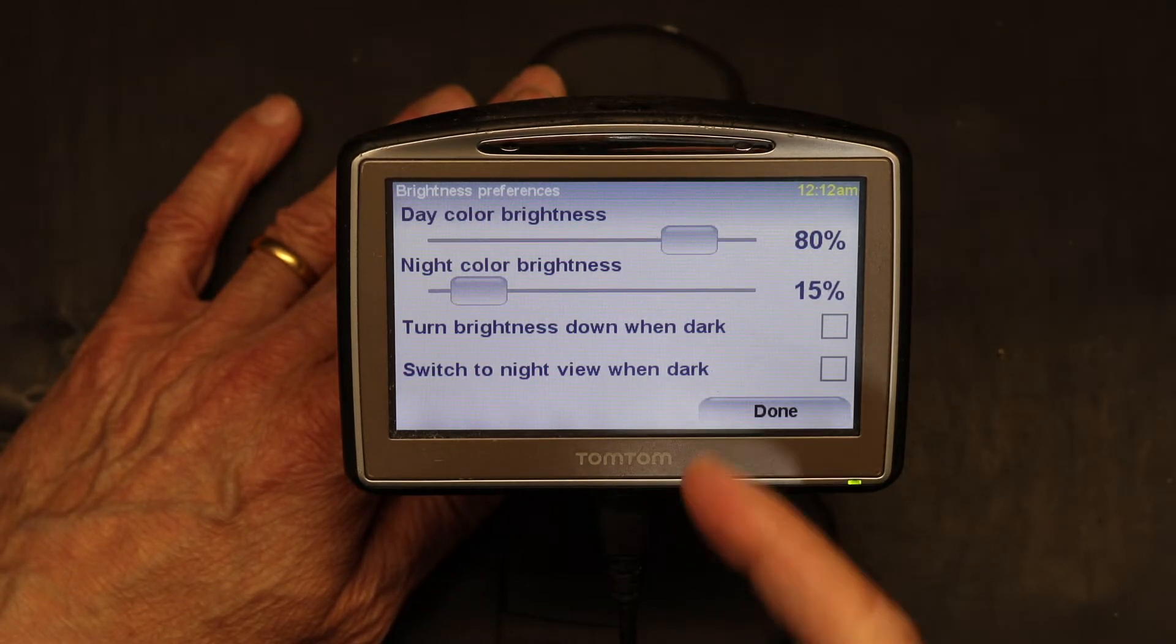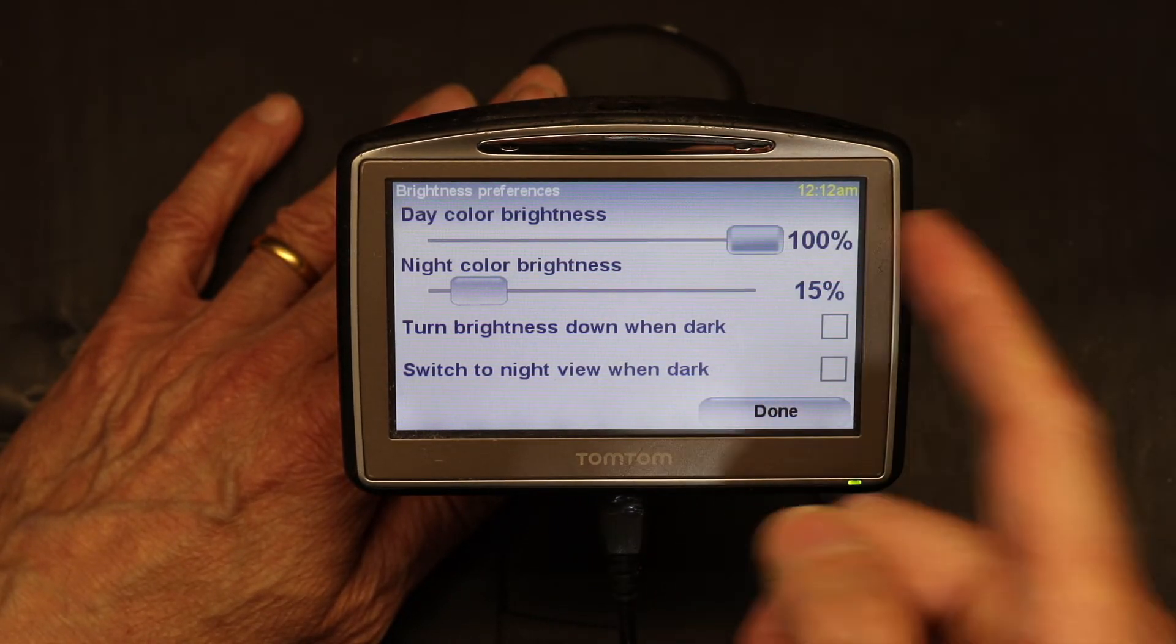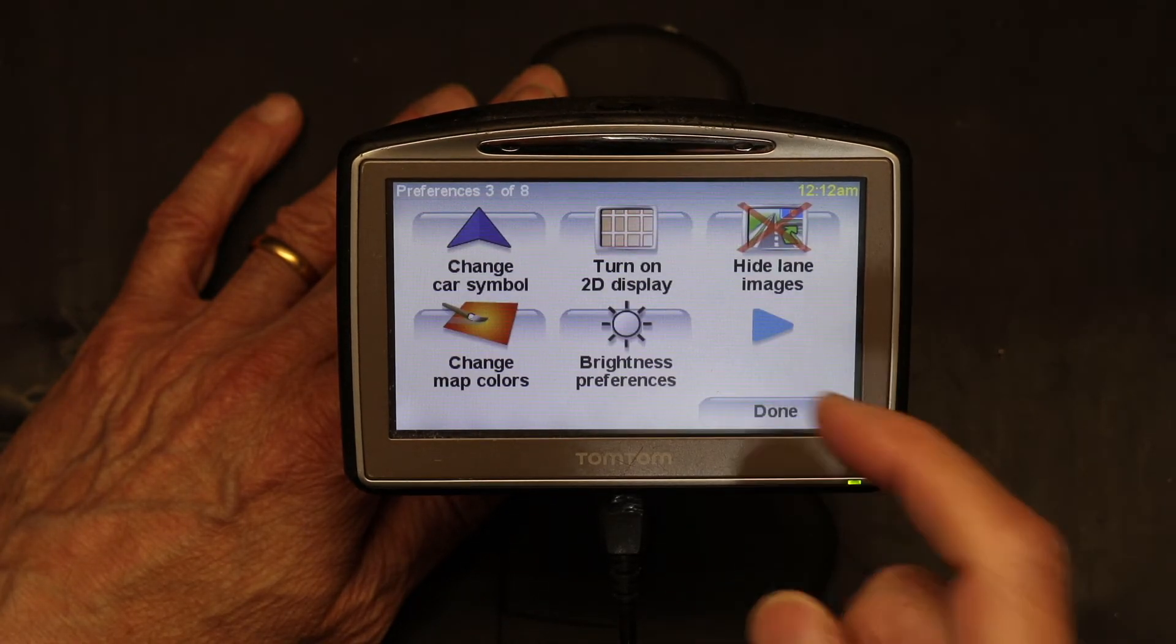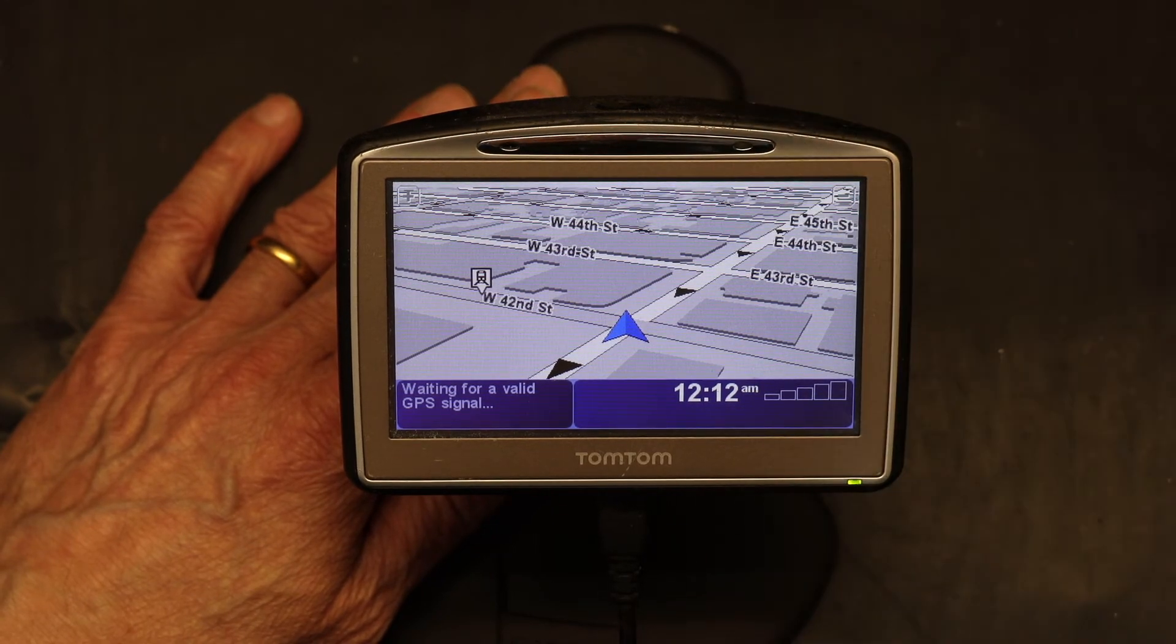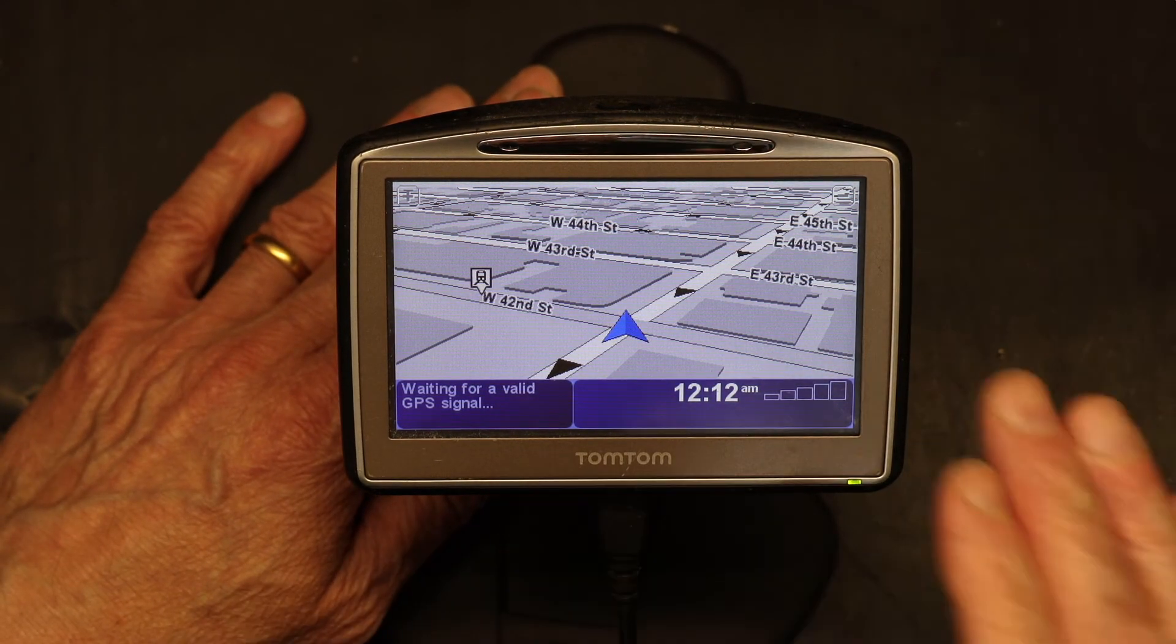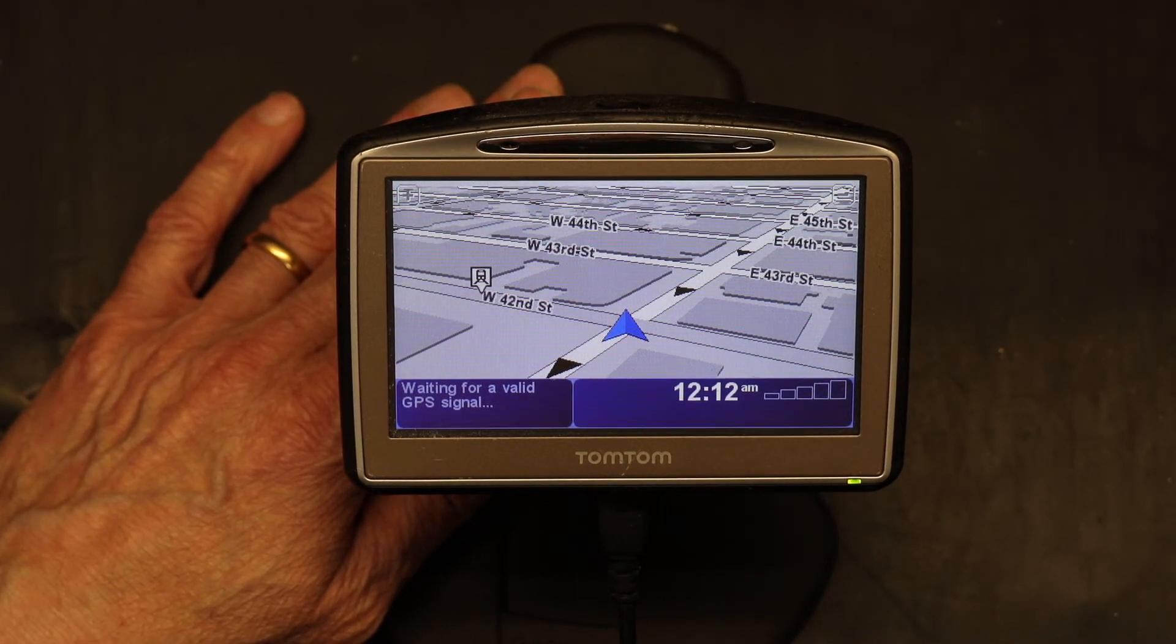Now I'm going to increase the brightness and I click done. And now it doesn't matter if I put my hand here or don't put my hand there, the screen has a fixed brightness and it will be set on that level.